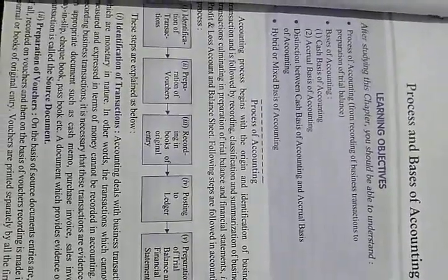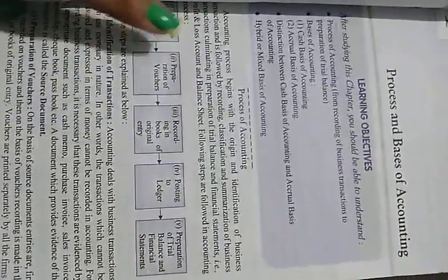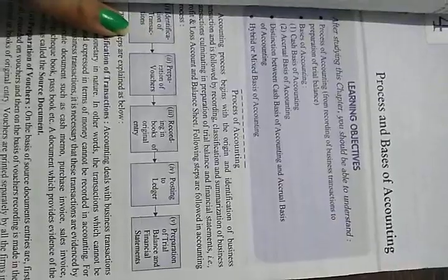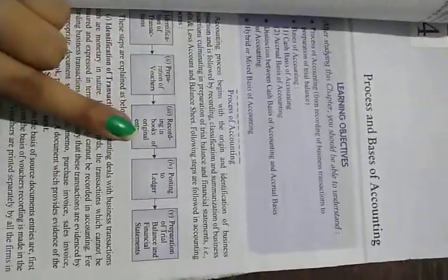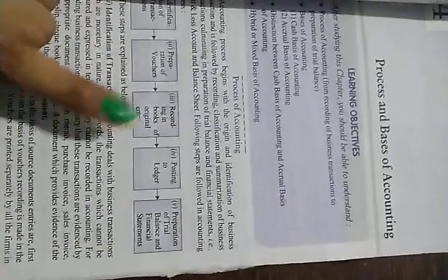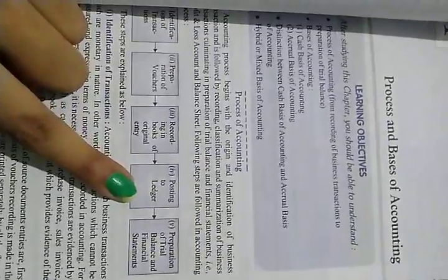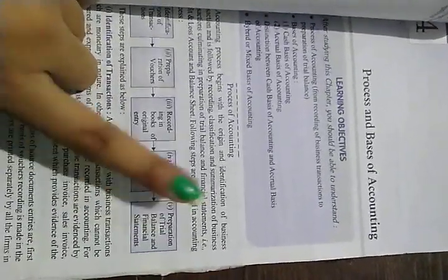First of all, we have to learn what steps are involved in accounting, which process we have to do step by step. So, accounting is done by: first, identification of transactions; second, preparation of vouchers; third, recording of transactions in the book of original entry, that is the journal; then posting to ledger; and finally, preparation of trial balance and financial statements. So let's study step by step.